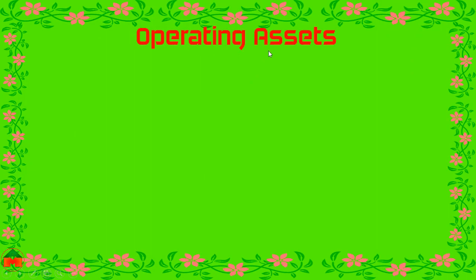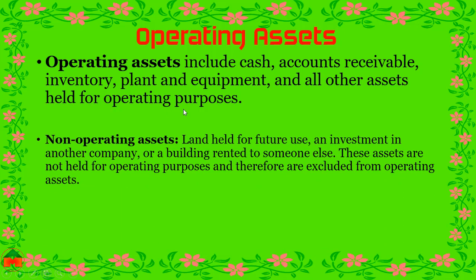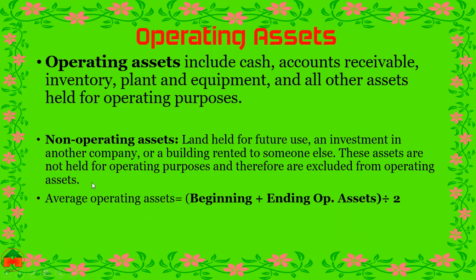Operating assets include cash, accounts receivable, inventory, plant and equipment, and all other assets held for operating purposes. Non-operating assets — such as land held for future use, an investment in another company, or a building rented to someone else — are excluded from operating assets.